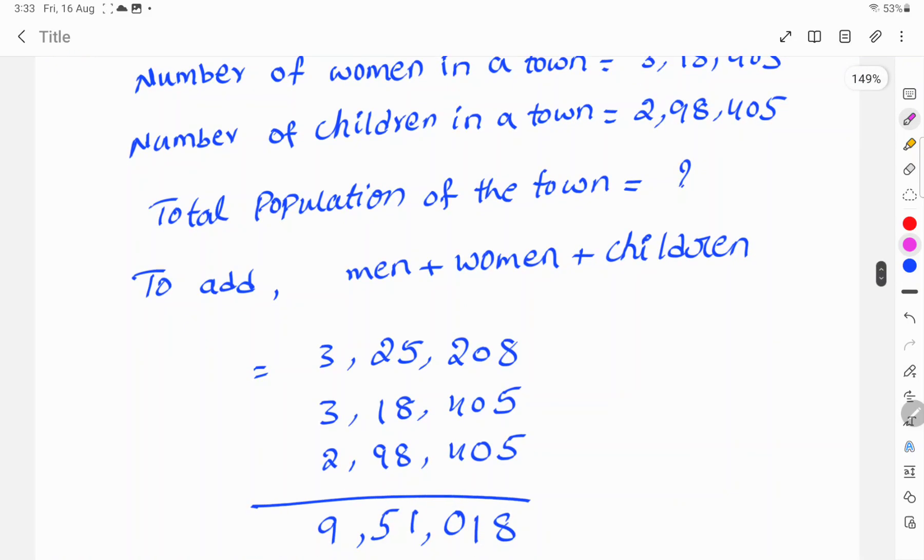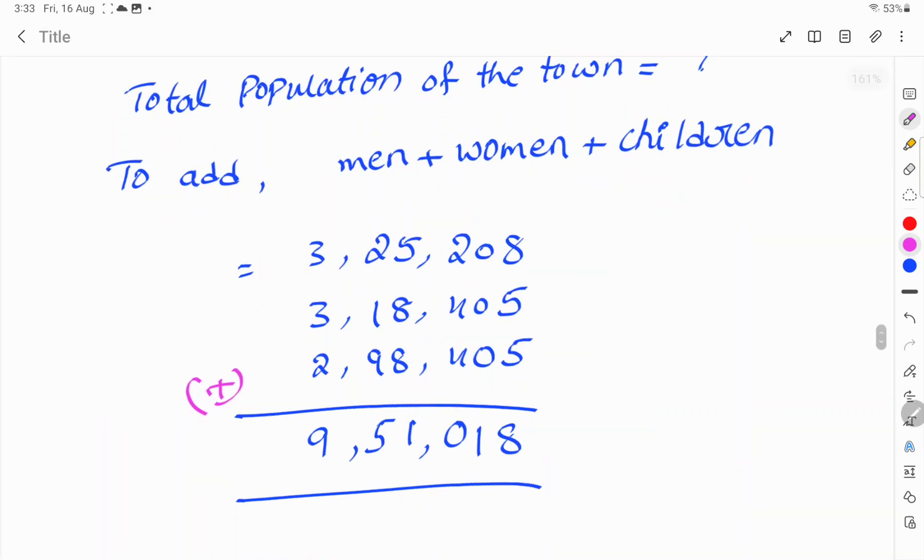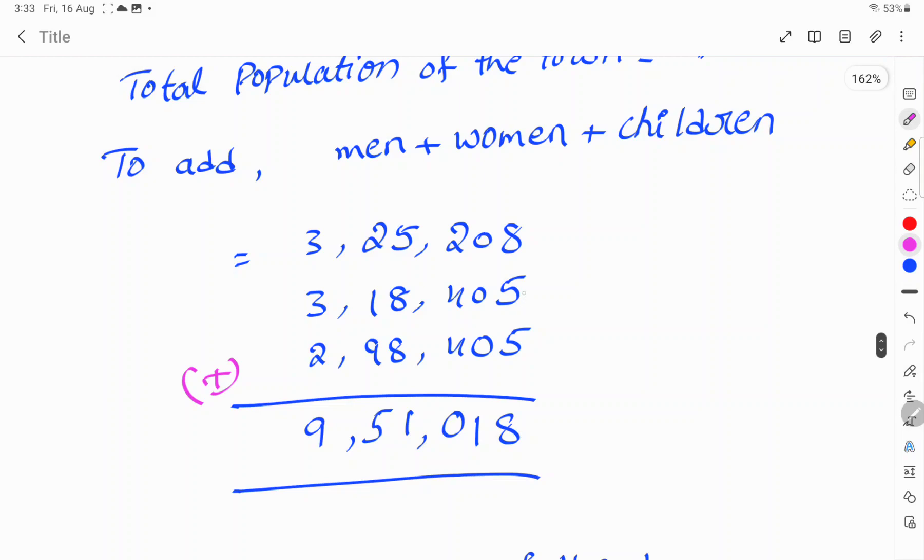To add these numbers: 3,25,208 plus 3,18,405 plus 2,98,405. To add this, 5 plus 5 plus 5 is 15. 0 plus 0 plus 0 is 0, write 1. 2 plus 4 plus 4 is 10, write 0 and 1. 5 plus 8 is 13, plus 8 is 21, write 1 and 2.